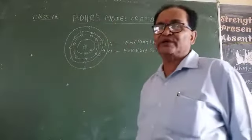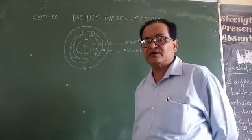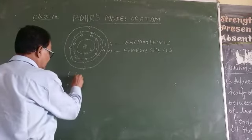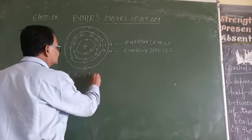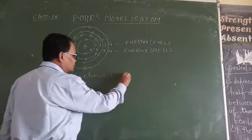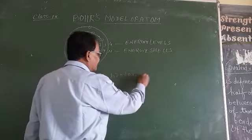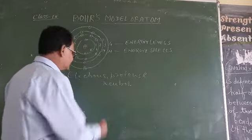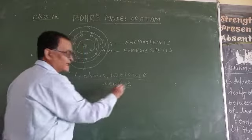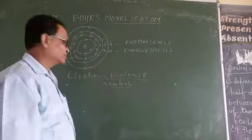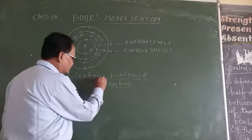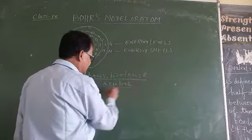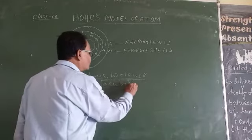According to Bohr, an atom is made up of 3 particles: electrons, protons, and neutrons. These are called subatomic particles by which an atom is made up of. Electrons are negatively charged particles, protons are positively charged particles, and neutrons have no electric charge.